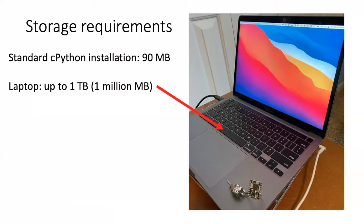To understand why we need a special version of Python, we need to think about what normal Python is like. The standard Python installation, which is called CPython, takes about 90 megabytes of space on a hard drive. For most modern computers, that's a drop in the bucket — they may have memory available for storage of up to a terabyte.